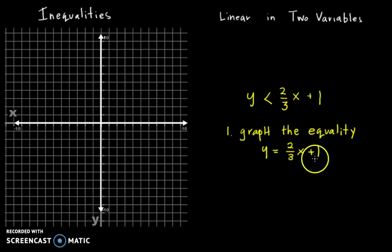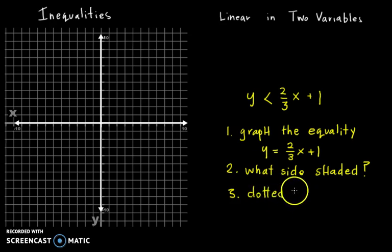That's all you got to do. Just graph the line. Just pretend it was just an equality. Then after that, then you have to say... what side shaded... and lastly you have to say... dotted or solid line. That's really the only thing you need to do. Those three steps and you've got it in the bag.